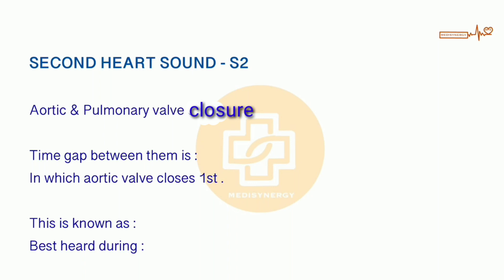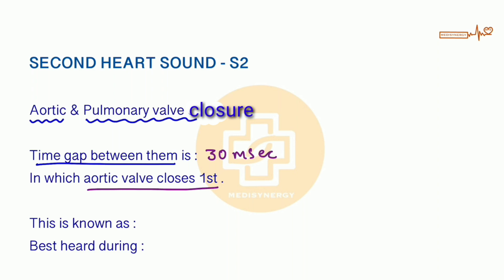In this video we will discuss the second heart sound. The second heart sound is characterized by aortic and pulmonary valve closure, and the time gap between the closure of the aortic and pulmonary valve will be 30 milliseconds. The aortic valve closes first, followed by the pulmonary valve — this is known as physiological split.